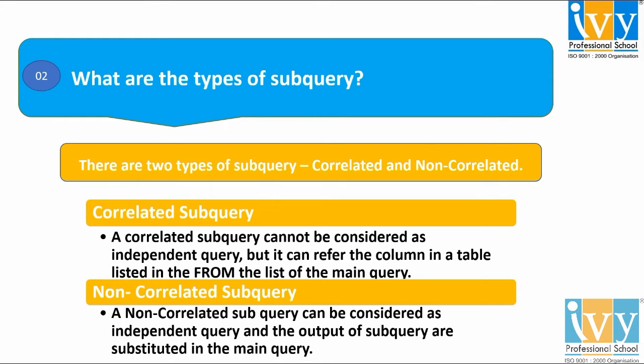The main difference between a correlated subquery and a not correlated subquery lies in the dependency factor. A correlated subquery depends upon the outer query and cannot be executed in isolation. But a not correlated subquery doesn't depend on the outer query and can execute in isolation.